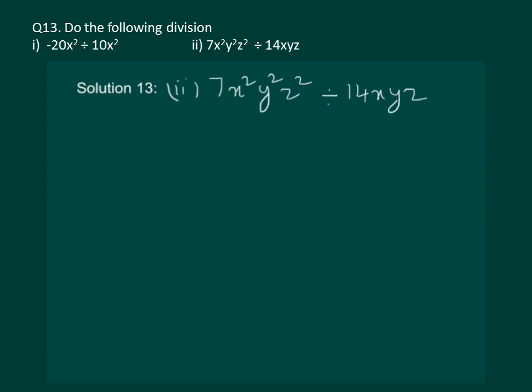Let us read the question. Do the following division 7x square y square z square divided by 14xyz. This can be written as 7x square y square z square whole divided by 14xyz.